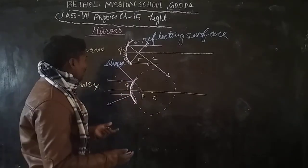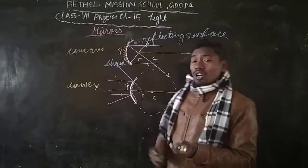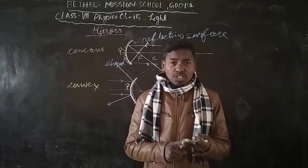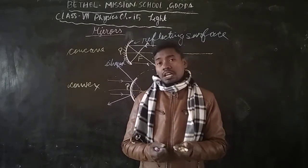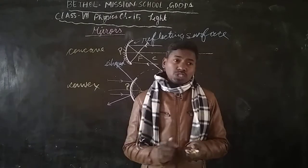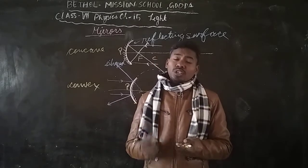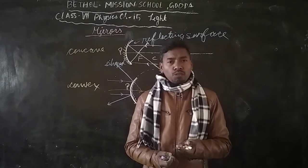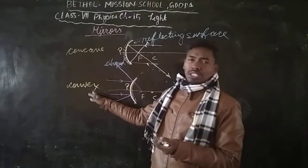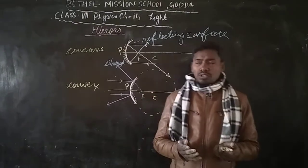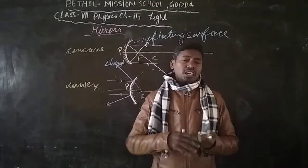I hope you understood the different types of mirror, the important characteristics of these two mirrors, what is pole, what is center of curvature, what is principal axis, and what is focus. Focus is the point towards which the rays parallel to the principal axis either converge in a concave mirror or diverge away from in a convex mirror. We will go on to image formation in concave and convex mirrors in the next video.